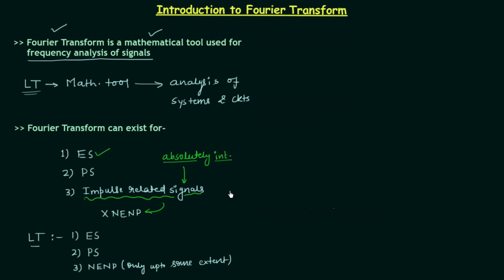If you remember the Fourier series expansion chapter, Fourier series expansion is only for periodic signals, and this is one major drawback when analyzing a given signal using Fourier series expansion. Therefore, we use Fourier transform. Fourier transform can be used for aperiodic signals as well.